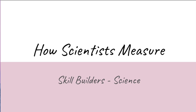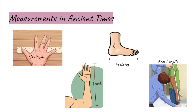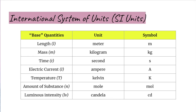Welcome to our unit on how scientists measure. In ancient times, people used different units of measurements such as a hand span, a cubit — which is the length from the tip of the middle finger to the elbow — footstep, and arm length. These methods were not satisfactory because these units of measurements varied from person to person.